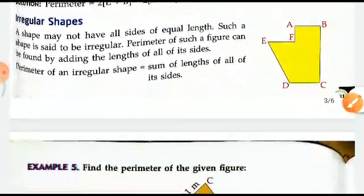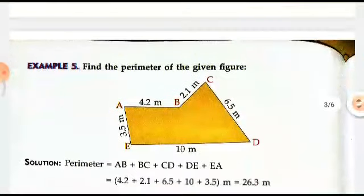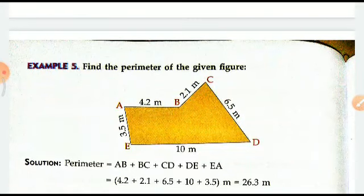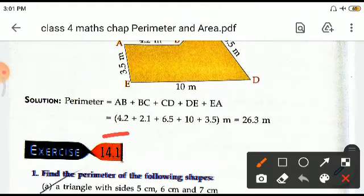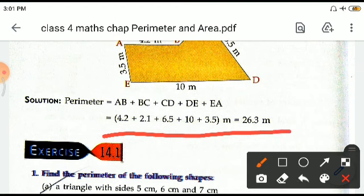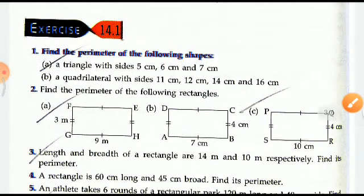For irregular shapes, you will have to add all the sides to get the perimeter. See in this diagram here, you will have to add all the sides, which has been clearly illustrated here, and the perimeter turns out to be 26.3 meters.